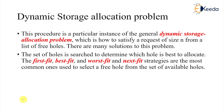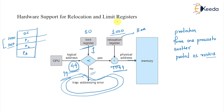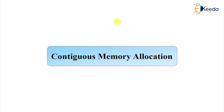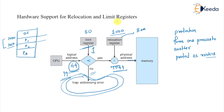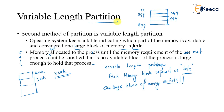The next problem to discuss is the dynamic storage allocation problem, which we will cover in the next session. To summarize this session on contiguous memory allocation: we have seen the need for base and limit registers for protection, and we covered two partition schemes — fixed-size partition and variable-size partition. That's all for this discussion. Thank you.